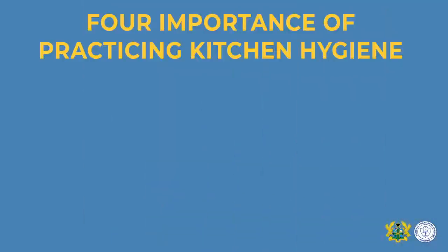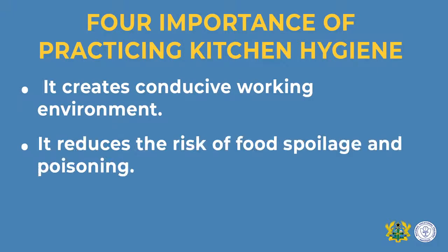Let's look at four importance of practicing kitchen hygiene. 1. It creates a conducive working environment — as you clean the work surfaces, sweep the floor, and empty your bins, it creates a friendly enabling environment for you to work in the kitchen. 2. It reduces the risk of food spoilage and poisoning. When you practice good kitchen hygiene, using different chopping boards for different actions reduces the risk of cross-contamination, thereby reducing food poisoning.